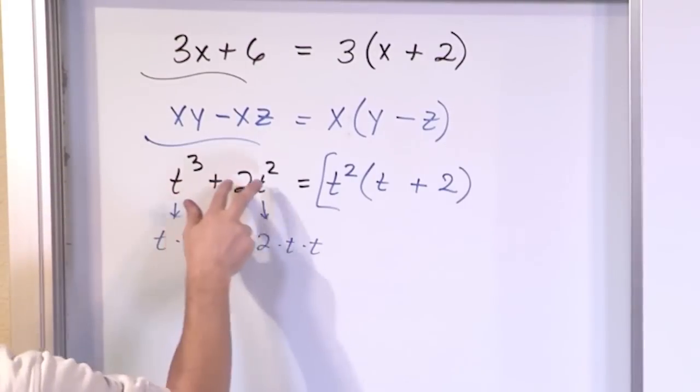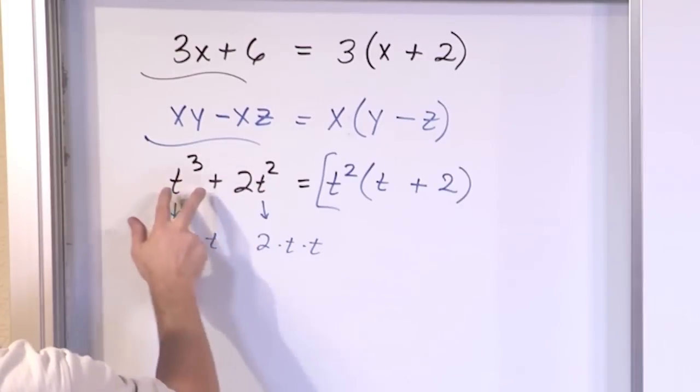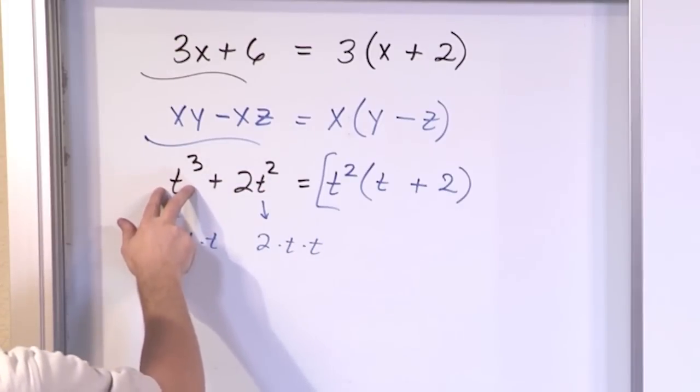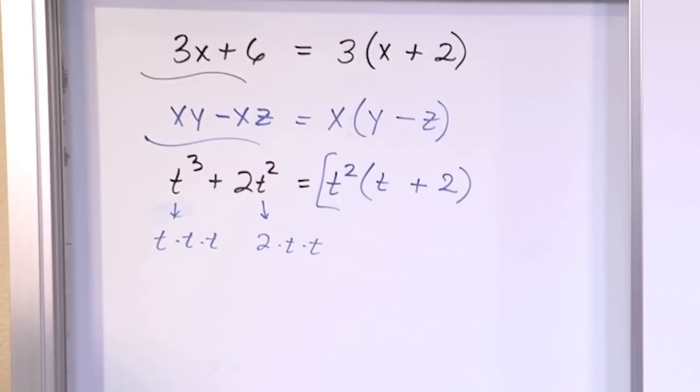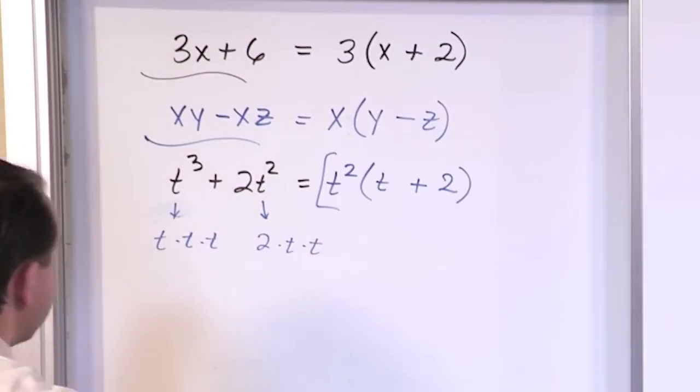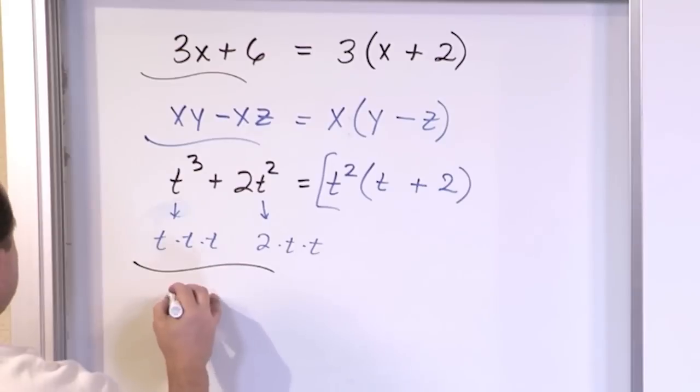So you're reaching in, you're looking to see the largest common thing here. In this case, t squared is common here, and it's also wrapped up inside here. I can pull it out and then I go and figure out what needs to be in there to make the multiplication true. And ladies and gentlemen, this is really the only thing to this section. There's not anything else to it. We're just going to work some problems.